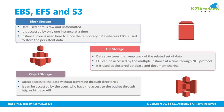Amazon Elastic File System provides a simple, scalable, fully managed elastic NFS file system for use with AWS Cloud Services and on-premise resources. Amazon Elastic Block Store is an easy-to-use, high-performance block storage service designed for use with Amazon Elastic Compute Cloud for both throughput and transaction-intensive workloads at any scale. Amazon Simple Storage Service is a storage for the internet — you can use Amazon S3 to store and retrieve any amount of data at any time from anywhere on the web.